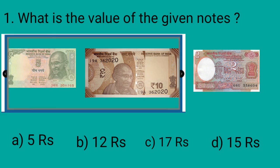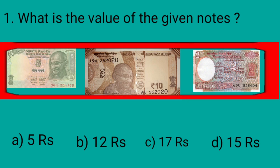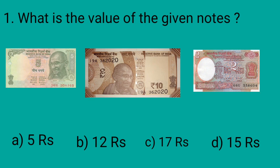Let's add their values. 5 and 10 is equal to Rs. 15. And now Rs. 15 and 2 make Rs. 17. Yes, we get Rs. 17 on adding the value of these three notes. Option C, 17, is the correct option here, and we will put a tick mark at option C.